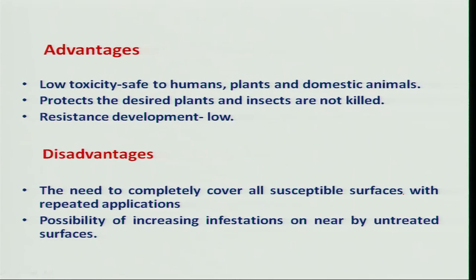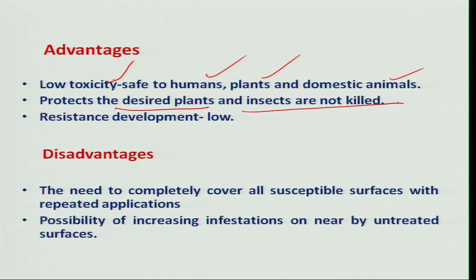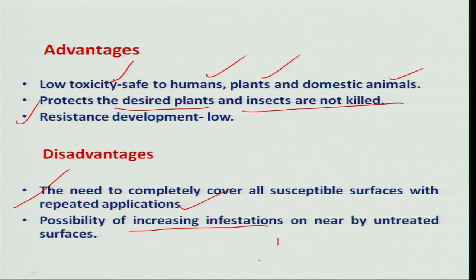Attractants, repellents, and feeding deterrents have their own advantages. Since they are used at low toxicity, they are safe to humans, plants, and domestic animals. They are applied on desired plants while natural enemies are spared, and chances of resistance development are low. However, they cannot completely cover the entire surface area, so repeated application is required. If untreated areas remain, insects may move there, which is why these programs need to be applied on an area-wide basis.